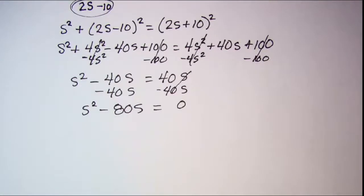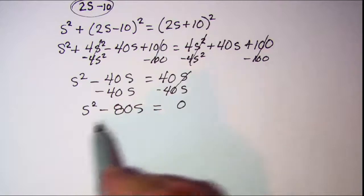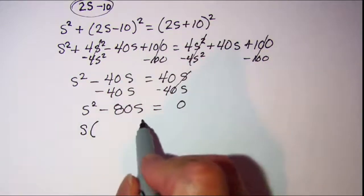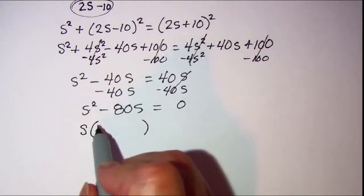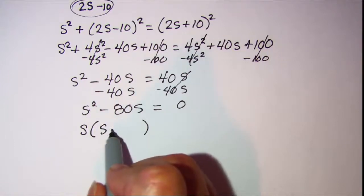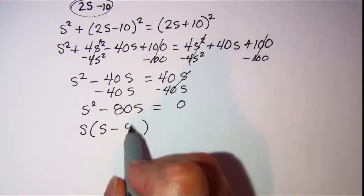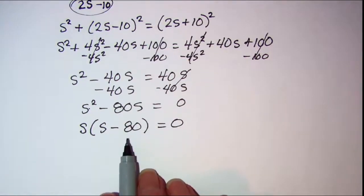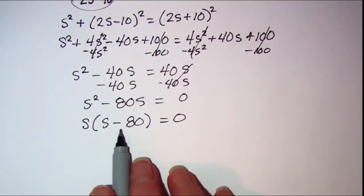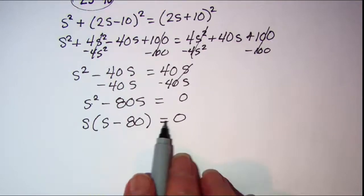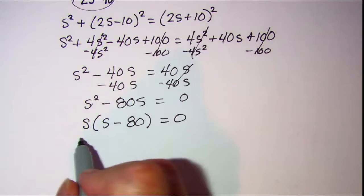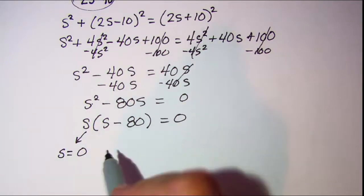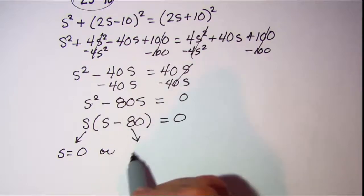So I can use the zero factor property here. I'll factor out an s, and then I'll be left with an s in the first term minus 80 in the second term. Now the zero factor property says that if you have two or more factors multiplied together and their product is zero, then one of the factors is zero, or the other factor is zero.